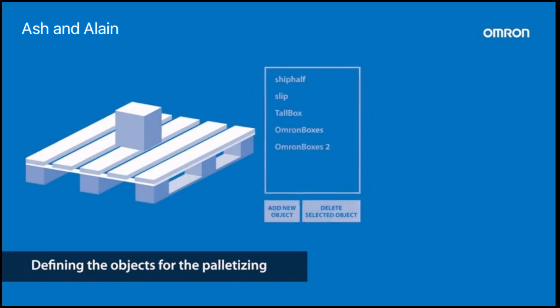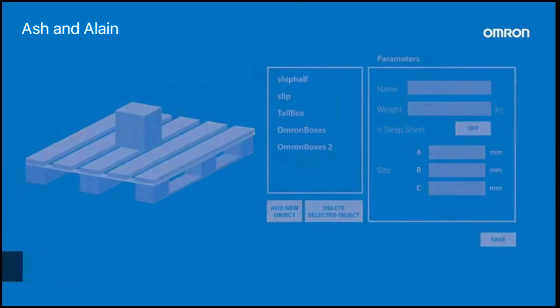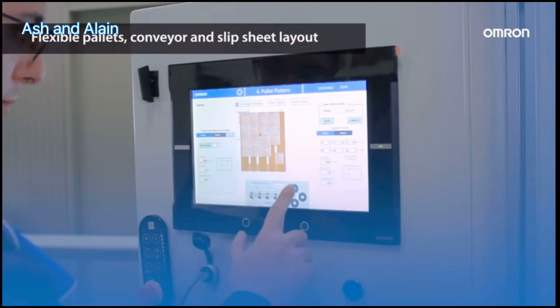Creating a list with all the objects for the palletizing and also defining the size and weight of the box or the slip sheet. It provides a flexible pallet, conveyor, and slip sheet layout configuration.